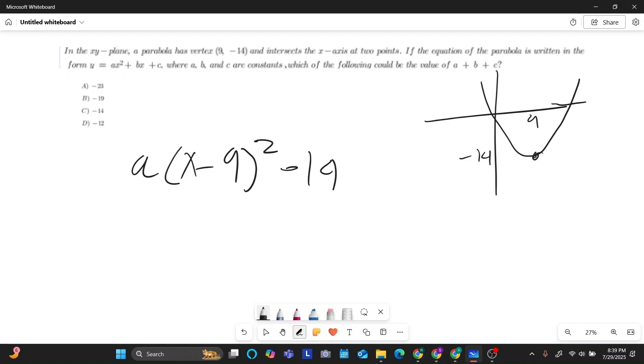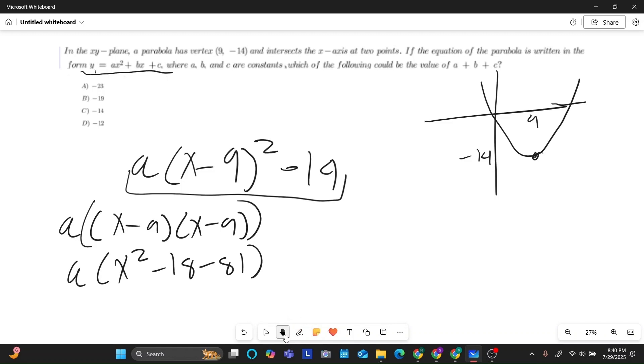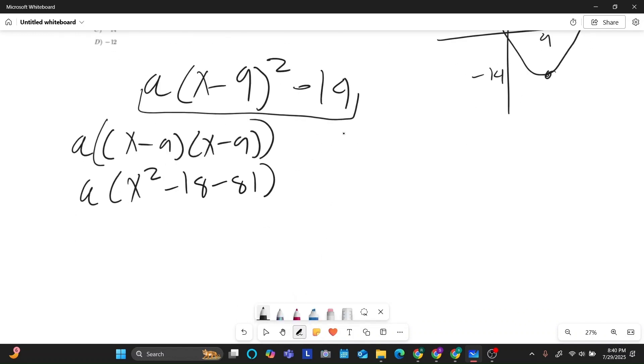And so now I know that this right here is going to be equivalent to ax-squared plus bx plus c. So I can actually factor this out and set it equal to this equation right here. And so if I was to do that, I would get a times x minus 9 times x minus 9, which would be a times x-squared minus 18x plus 81. I'm going to distribute that a to give me ax-squared minus 18ax plus 81a. And then you have your negative 14 at the end.